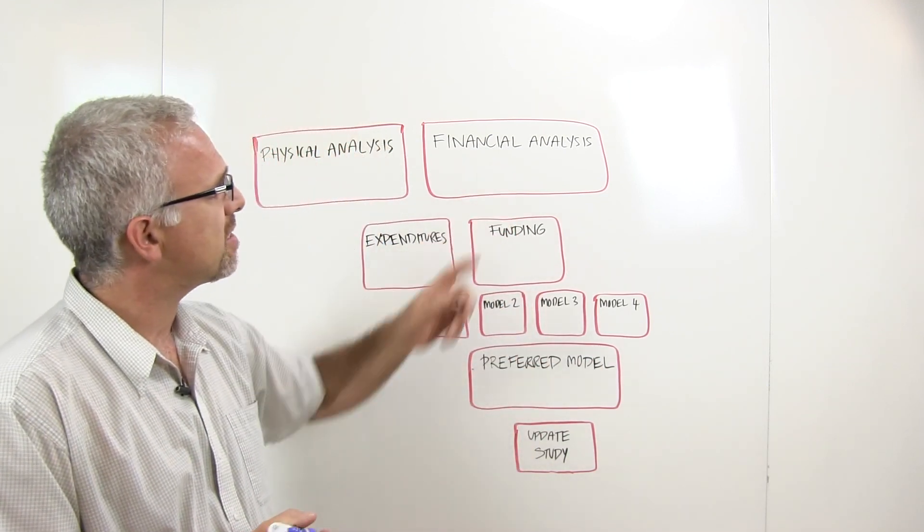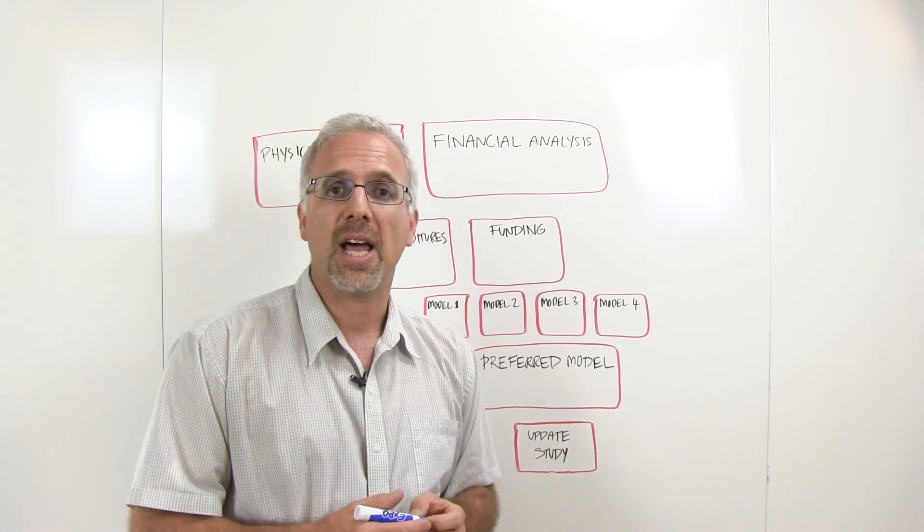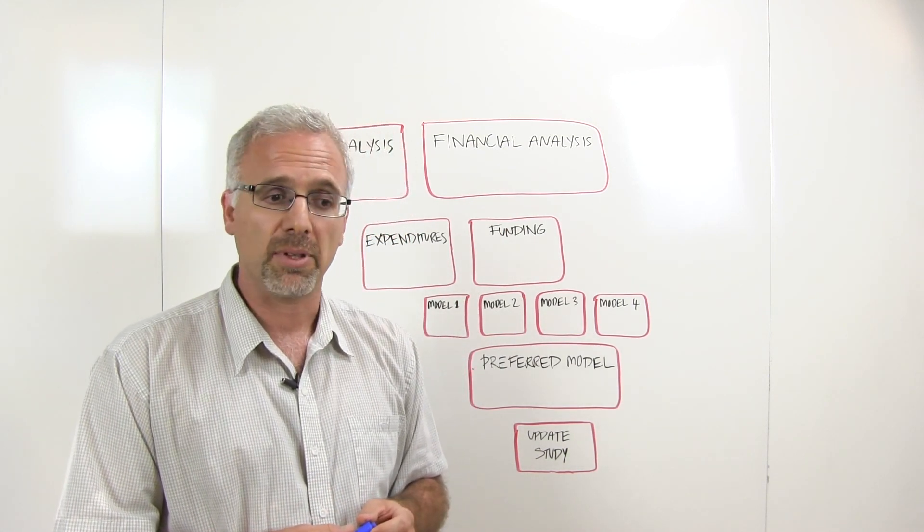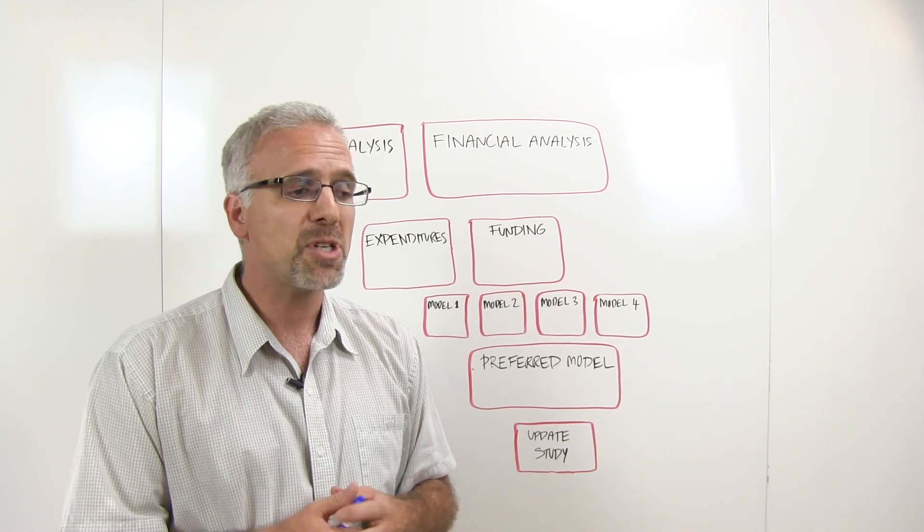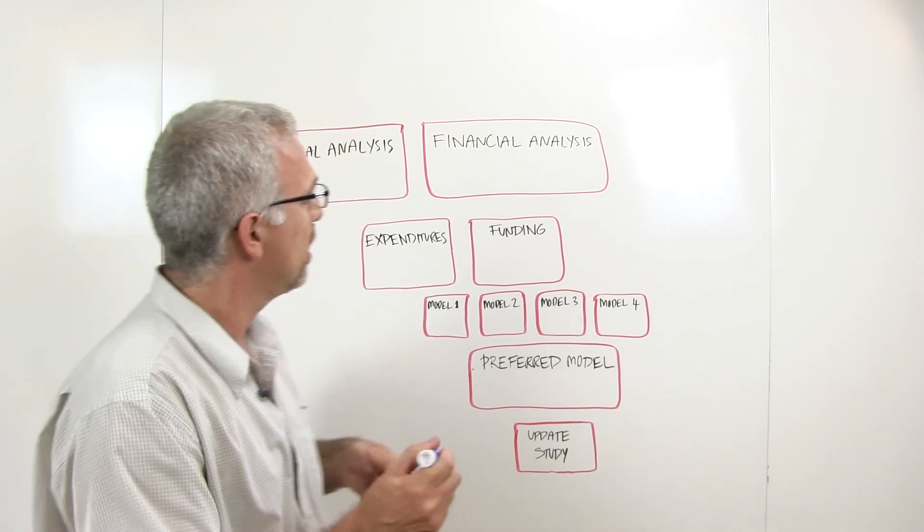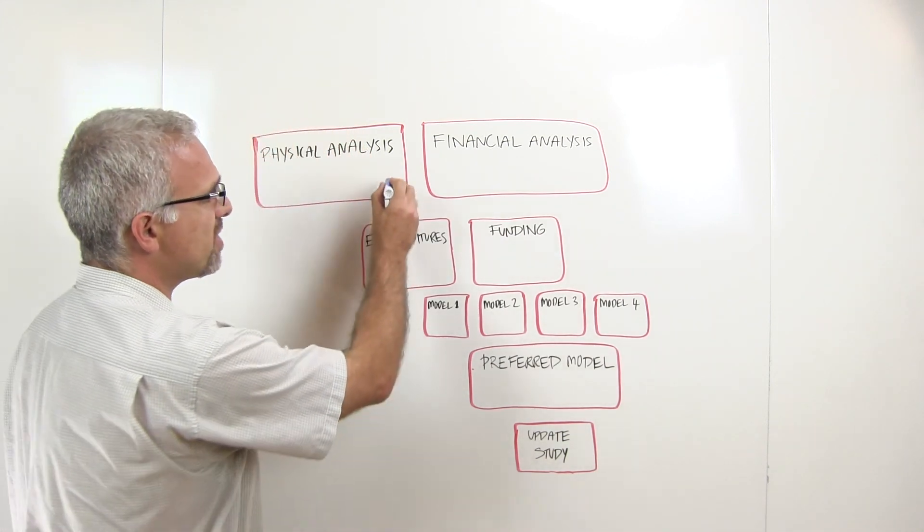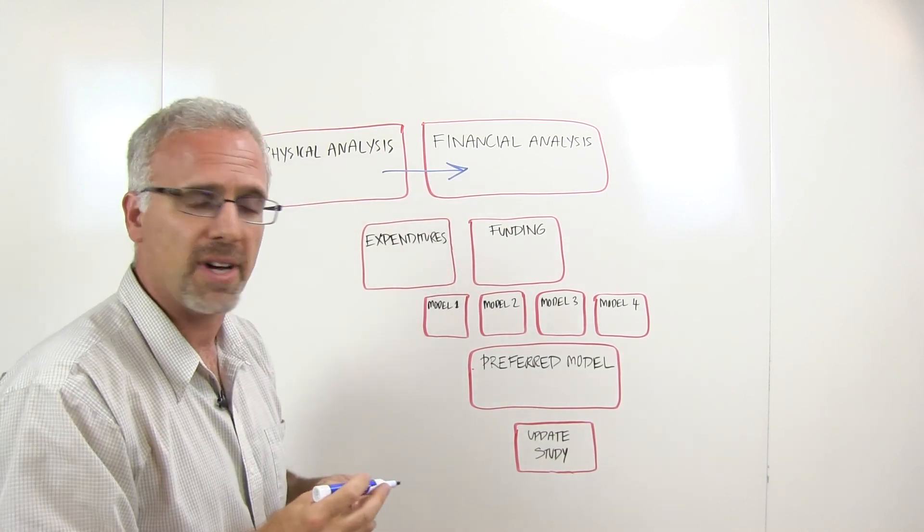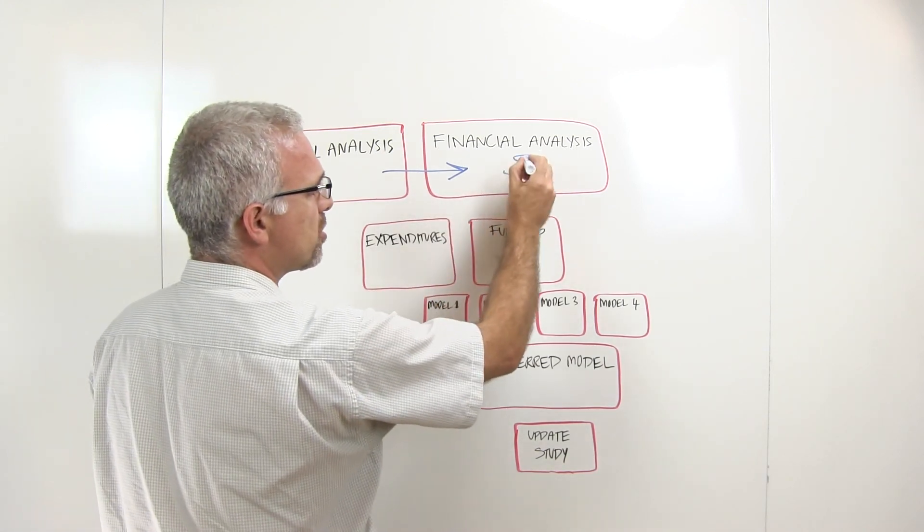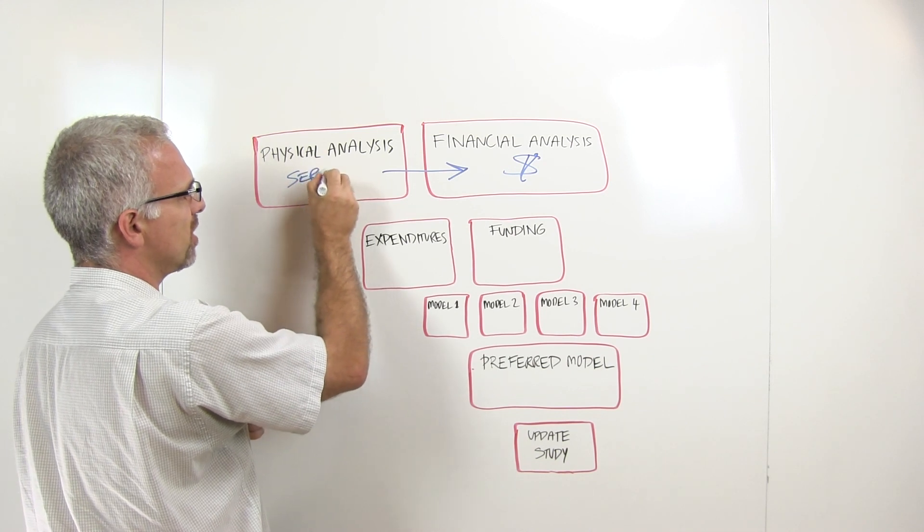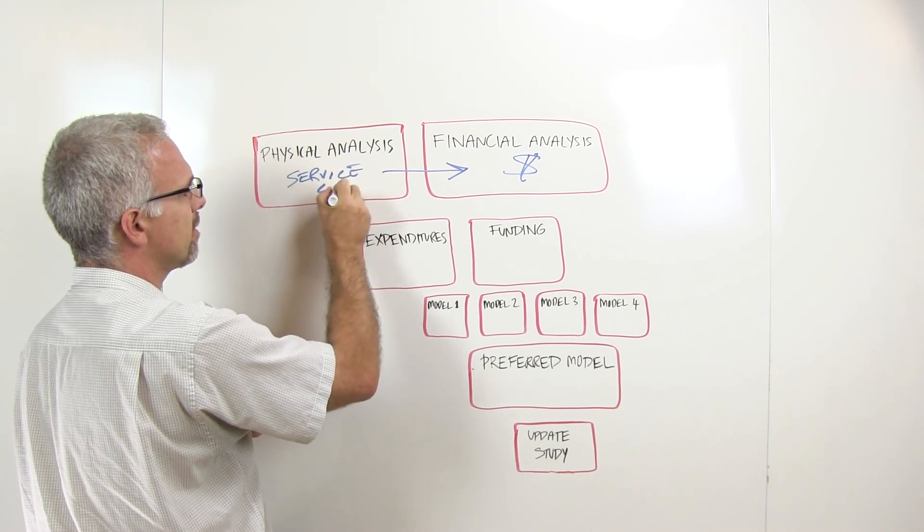The financial analysis is answering the question, how much money will we need? So if we go back to the example of the roof on our building, how much money are we going to need to replace that roof when it gets to the end of its life? The physical analysis informs and provides information towards the financial analysis. Here we're getting down to the dollars, and here we're talking about service life. How long do things last?